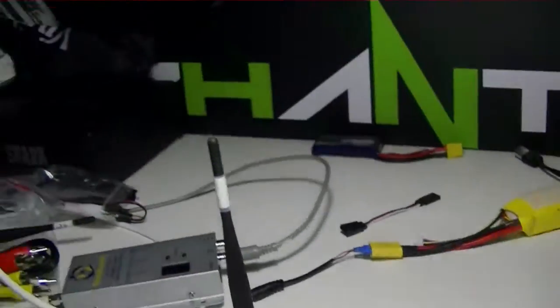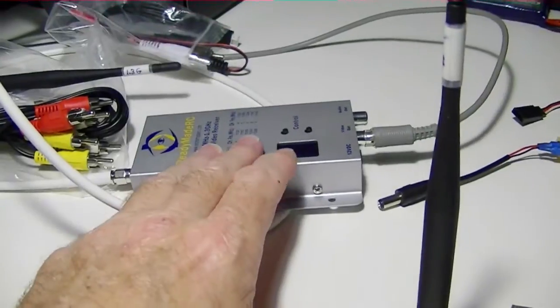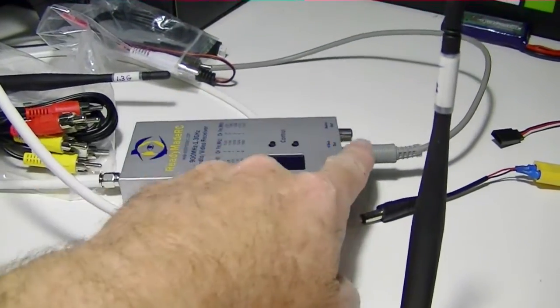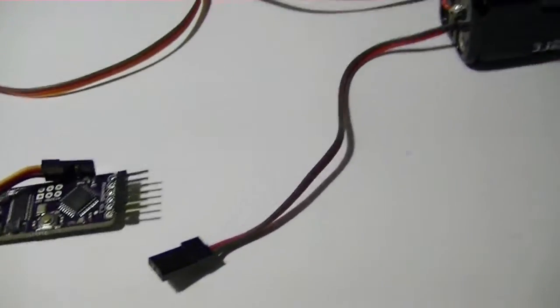Now over here, I have the ground station set up with the patch antenna and the receiver right here. And the video is going to my monitor over here, which I will turn on in a minute. So let's hook up the wires.